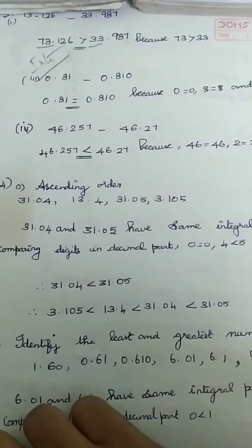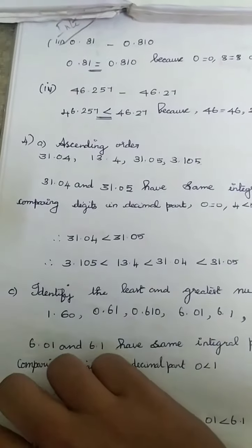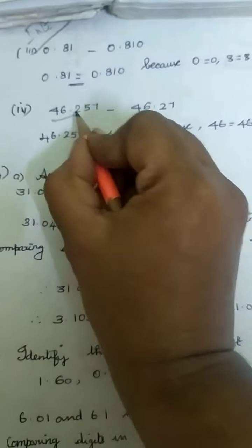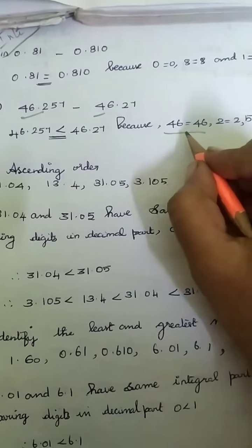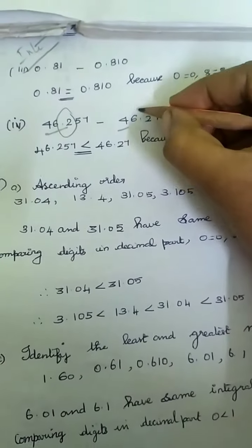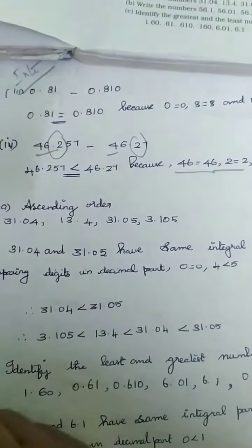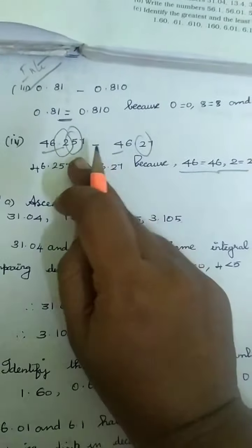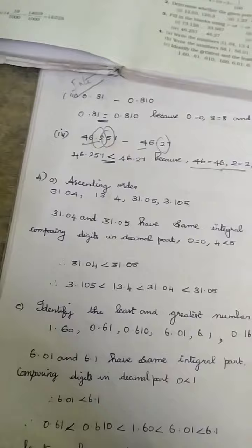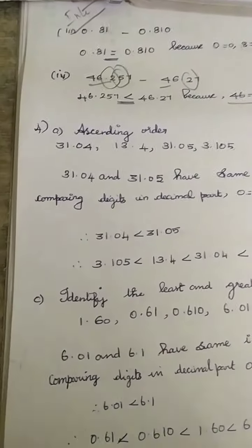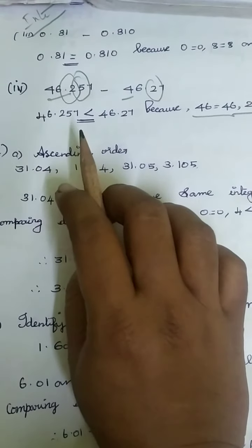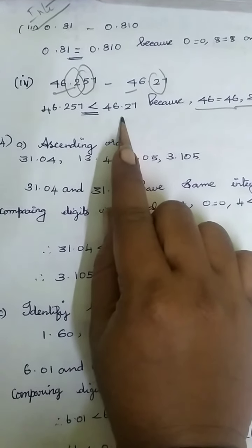Fourth subdivision: 46.257 and 46.27. First compare the integral part: 46 and 46 — both equal. Now compare the decimal part. In the tenths place you have 2 and 2 — equal again. So compare the hundredths place: 5 and 7. Five is smaller than seven, so 7 is the bigger number. Therefore 46.27 is greater than 46.257.